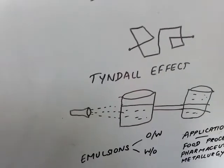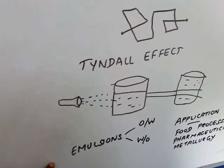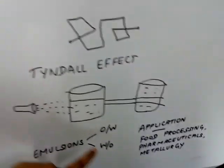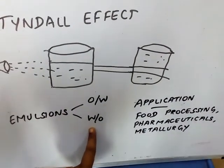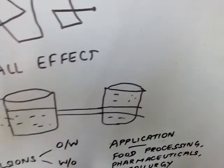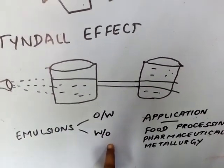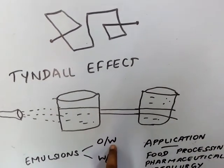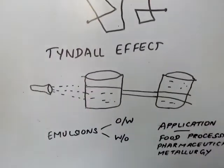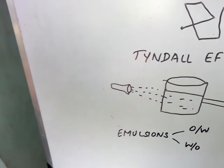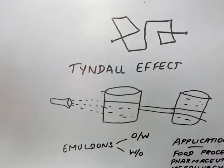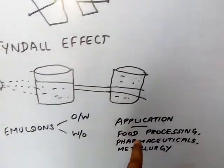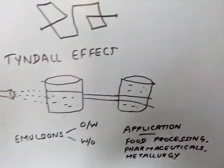This emulsions, emulsions plays a key role. One of the colloidal solution is emulsion. This emulsion is having two types: one is oil and water emulsion and another one is water in oil emulsion. Water in oil emulsion means water is the dispersed phase and oil is the dispersion medium. Same manner in oil and water emulsion, oil is the dispersed phase and water is the dispersion medium. This emulsion alone two liquids mixed and it forms different types of emulsion. This emulsion alone plays a key role in food processing, pharmaceuticals and metallurgy.